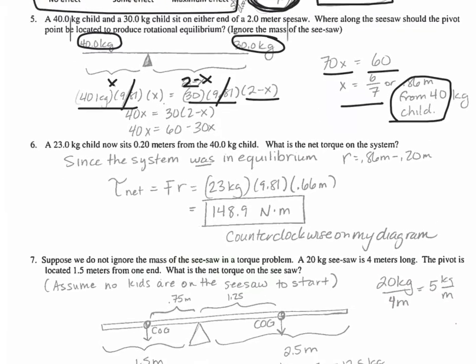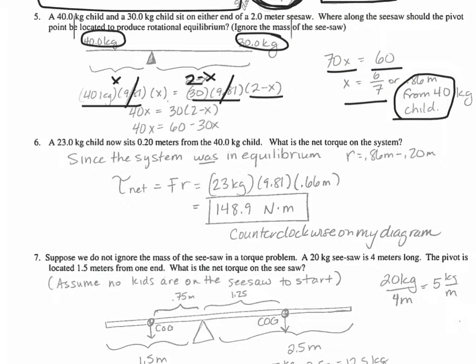Question 6. A 23-kilogram child now sits 0.2 meters from the 40-kilogram child. So in this scenario, we're taking a third child and placing them on the seesaw. We found out that x was 0.86, and these kids are 0.2 meters away, which tells me that the distance from this third kid to the pivot is 0.66 meters. To find the net torque, I'm going to take the weight times the distance, and I get 148.9 newton meters. The direction of this, adding this kid on the left side, is going to produce a counterclockwise torque, which is a positive torque on my diagram.